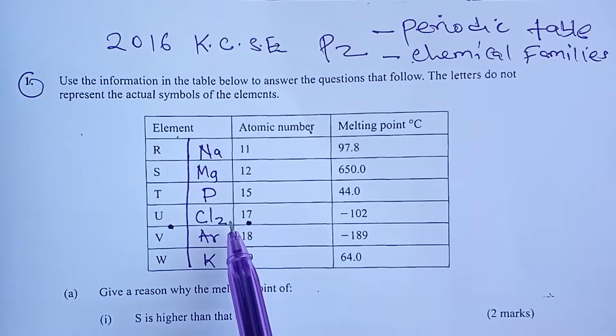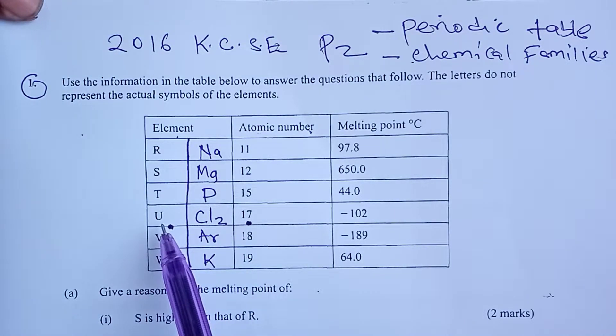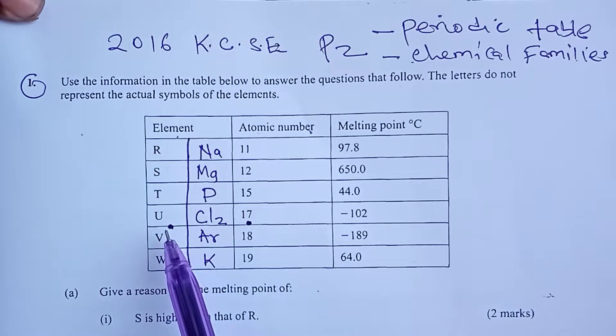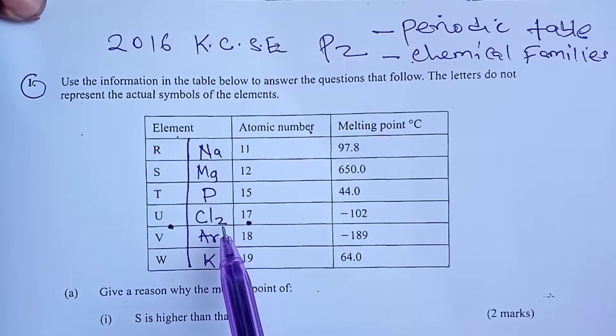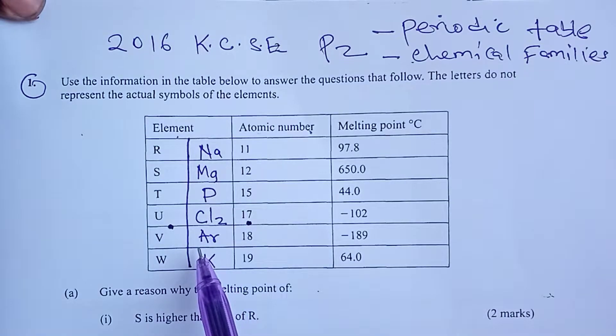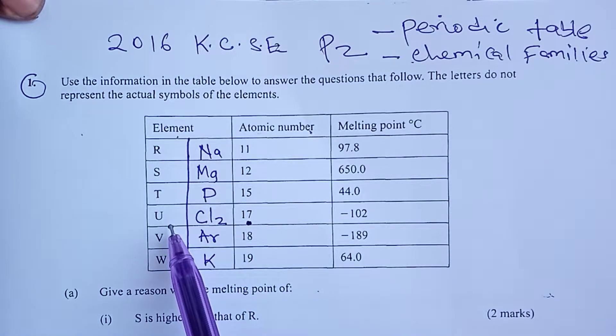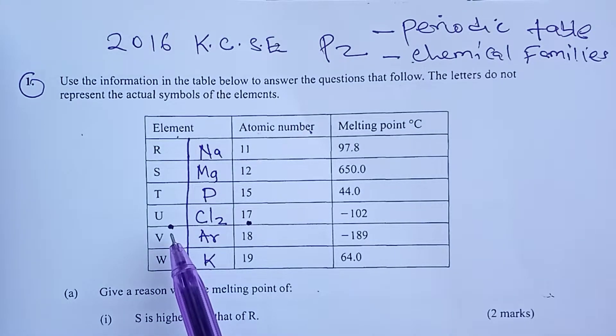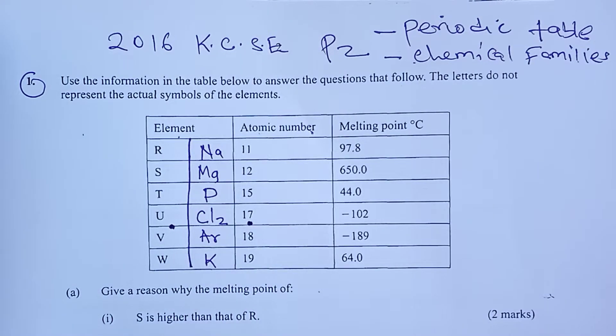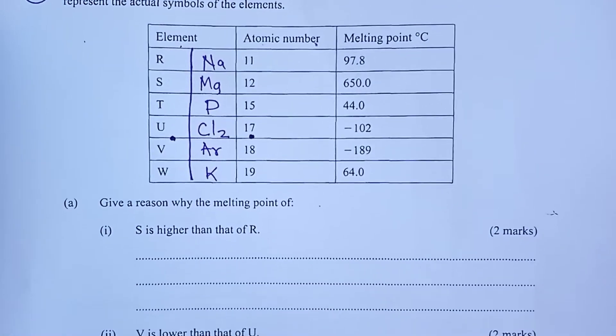When we will be writing the equation involving element U, if a student doesn't use U2 to represent Cl2, you will not be able to get that mark. For that reason, it is always important that as much as we shall be given letters, it is good we get their equivalent in form of the actual symbols of the elements. Now, having done this, let us now get into answering the questions that were asked based on the table.